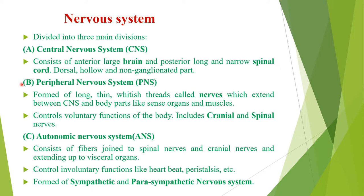The Peripheral Nervous System is formed of whitish thread-like nerves which extend between the Central Nervous System and different body parts such as sense organs and muscles. It controls the voluntary functions of the body and includes two types of nerves: cranial nerves and spinal nerves. The Autonomic Nervous System consists of fibers joining spinal and cranial nerves, extending to visceral organs, controlling involuntary functions like heartbeat and peristalsis. It is formed of sympathetic and parasympathetic nervous systems.